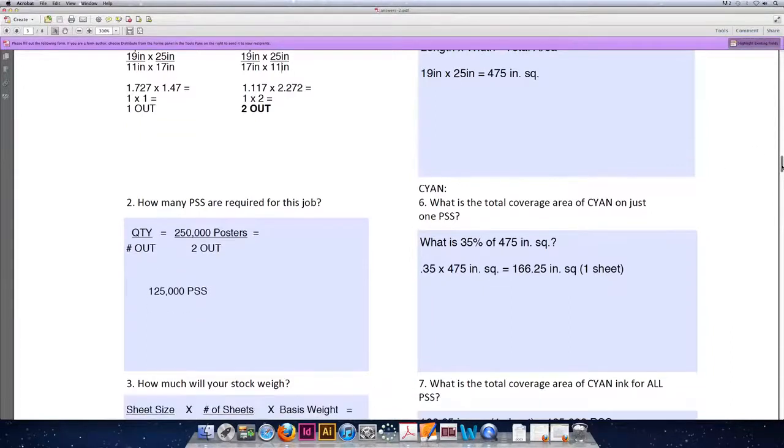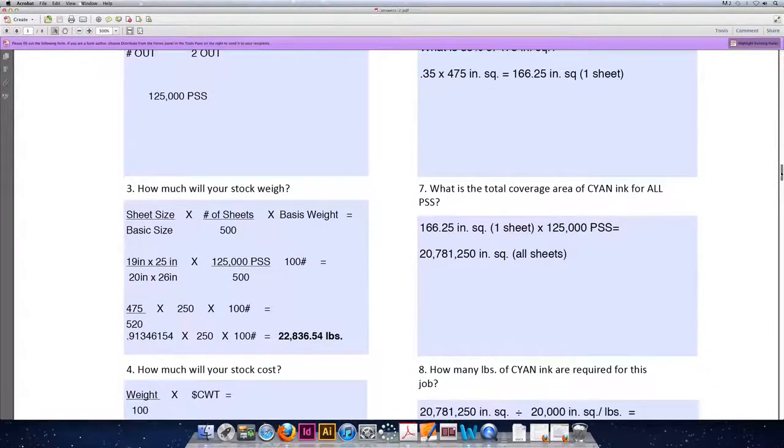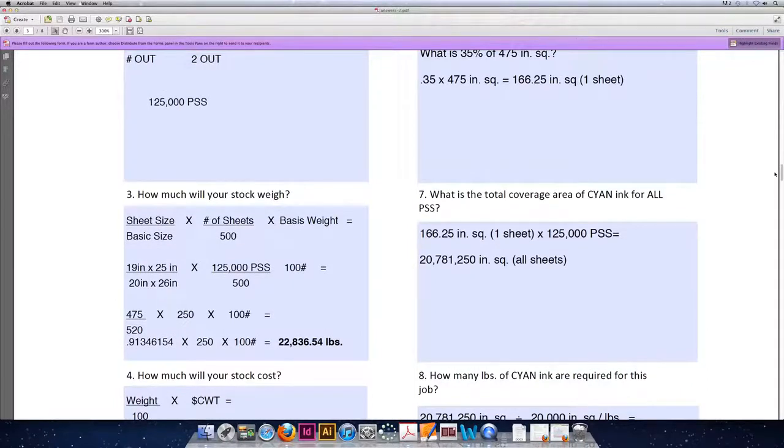Question seven says, if one sheet of paper needs 166.25 square inches, how many square inches of coverage do you need for all of your sheets? We have to recognize that question two already tells us the total number of sheets we're purchasing. So we'll take 166.25 square inches for one press-sized sheet and multiply it times 125,000 total press-sized sheets for a total coverage area of 20,781,250 square inches that must be covered in cyan ink.